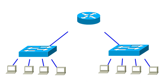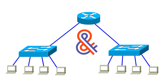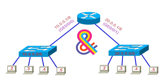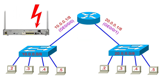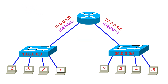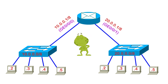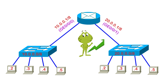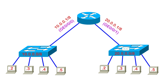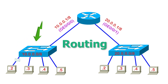A router connects different networks and works as an intermediate device. It has multiple interfaces. When it receives a data packet on an interface, it reads the packet's destination address, makes the forwarding decision, selects the forwarding interface based on that decision, and forwards the packet from the selected interface. This process is known as routing.